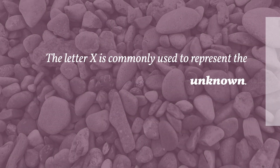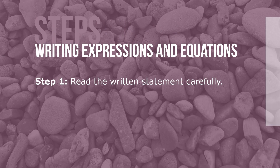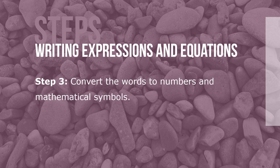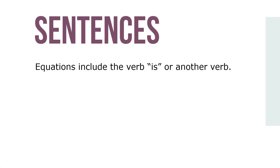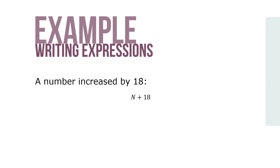The letter x is commonly used to represent the unknown. The relationship between the knowns and the unknowns involves addition, subtraction, multiplication, or division, or a combination of two or more of these. Here are the steps for writing equations and expressions. Step 1: read the written statement carefully. Step 2: identify and underline the key words and phrases. Step 3: convert the words to numbers and mathematical symbols. Think of equations as complete mathematical sentences that include the verb 'is' — when no such verb is present, the statement is an expression. For example, 'a number increased by 18' would be written as n plus 18.